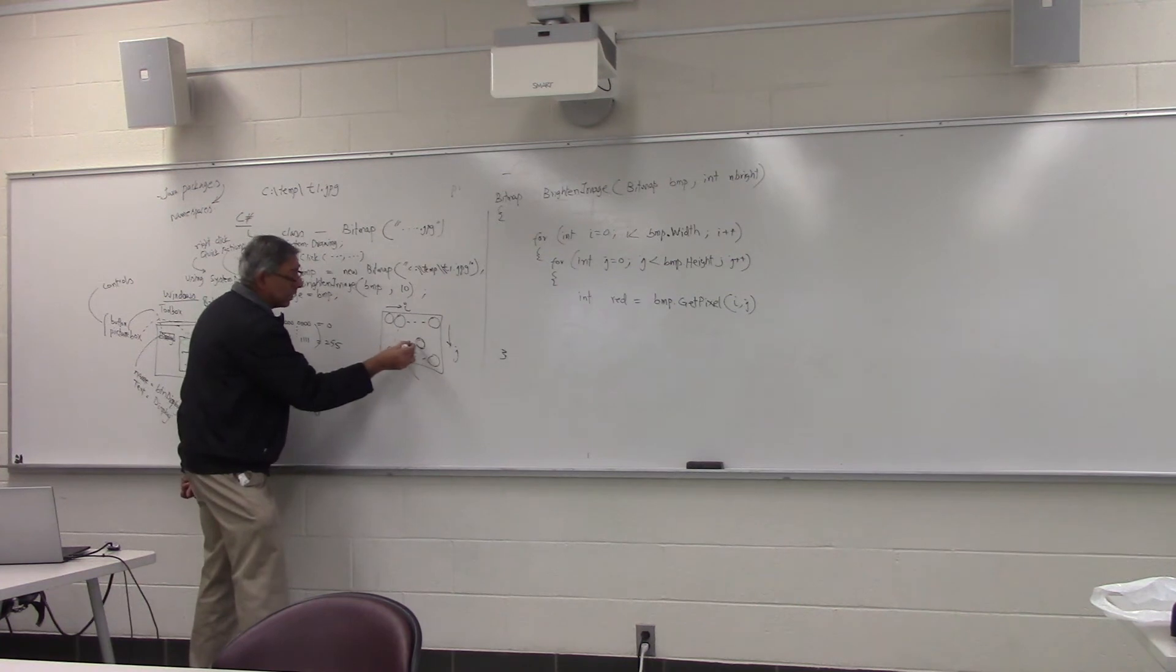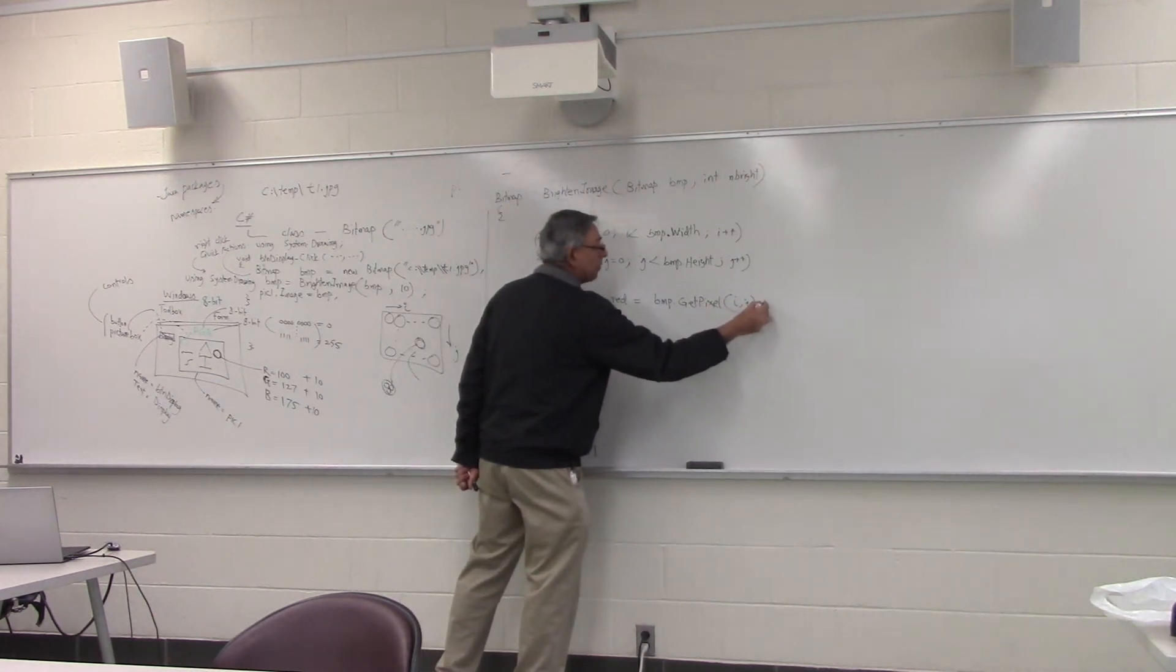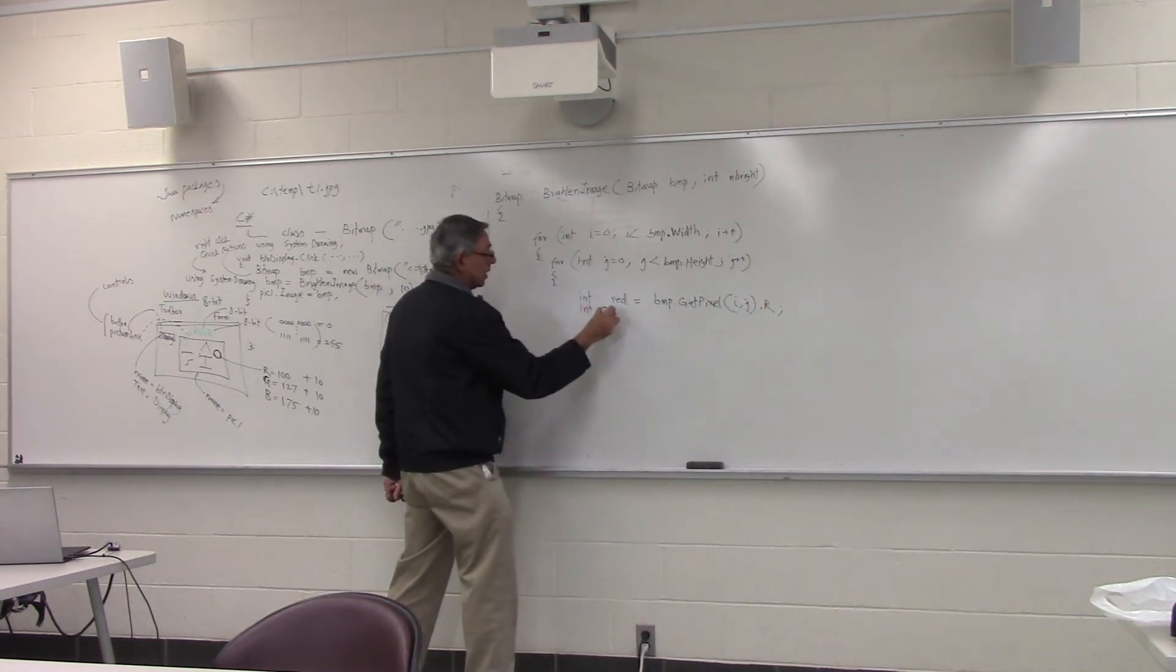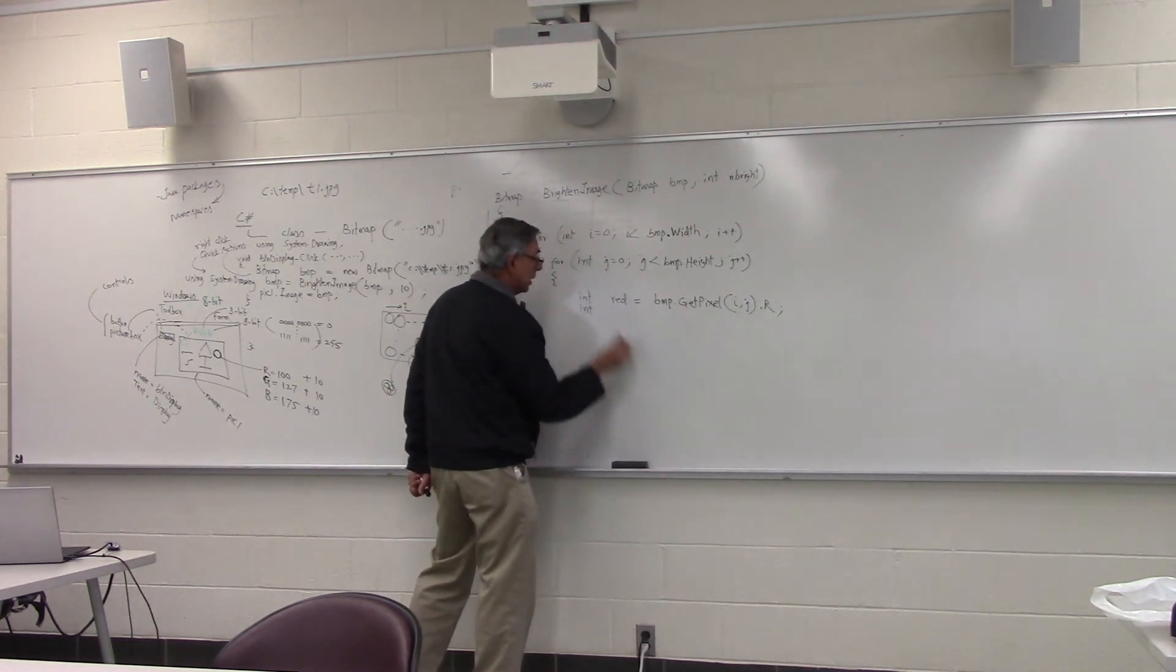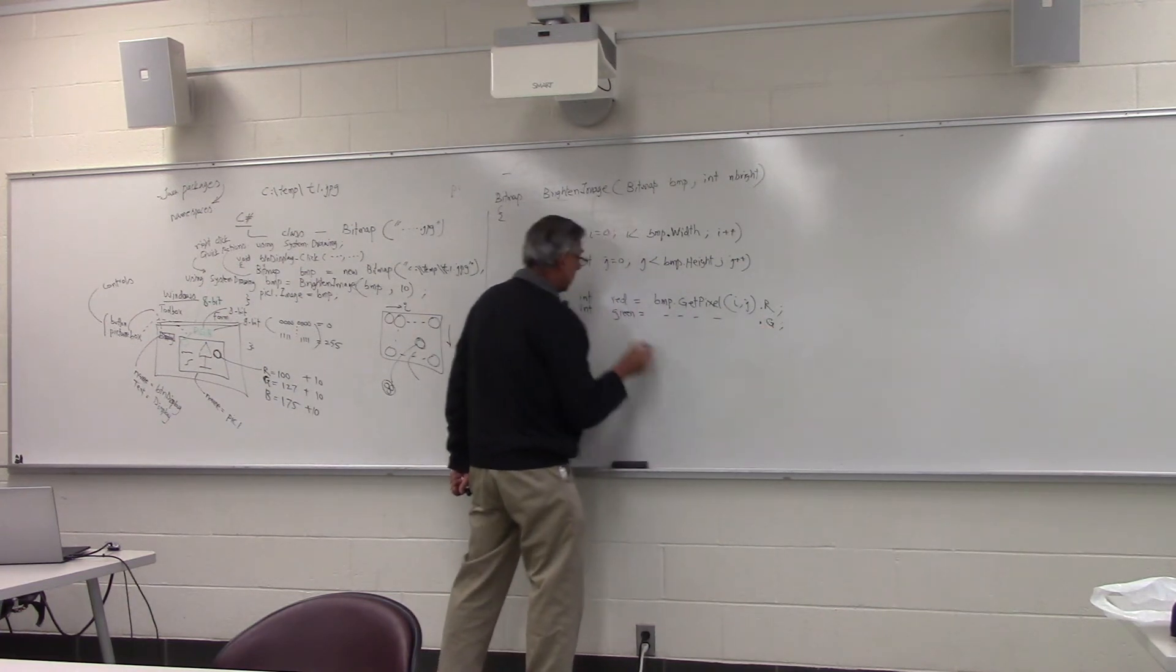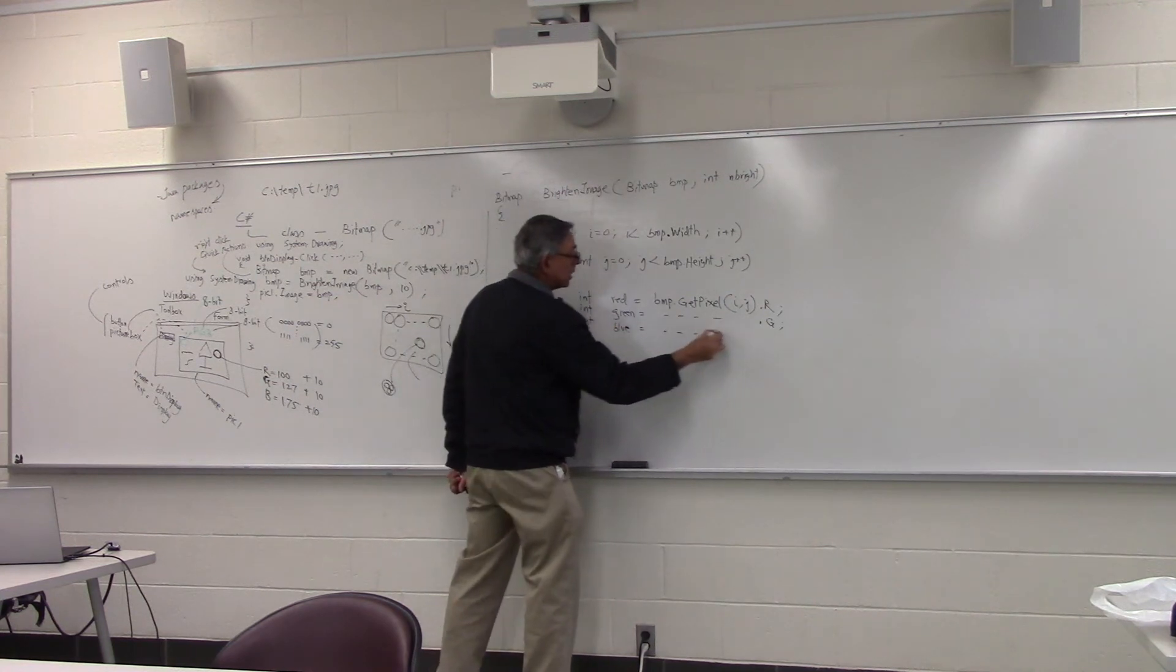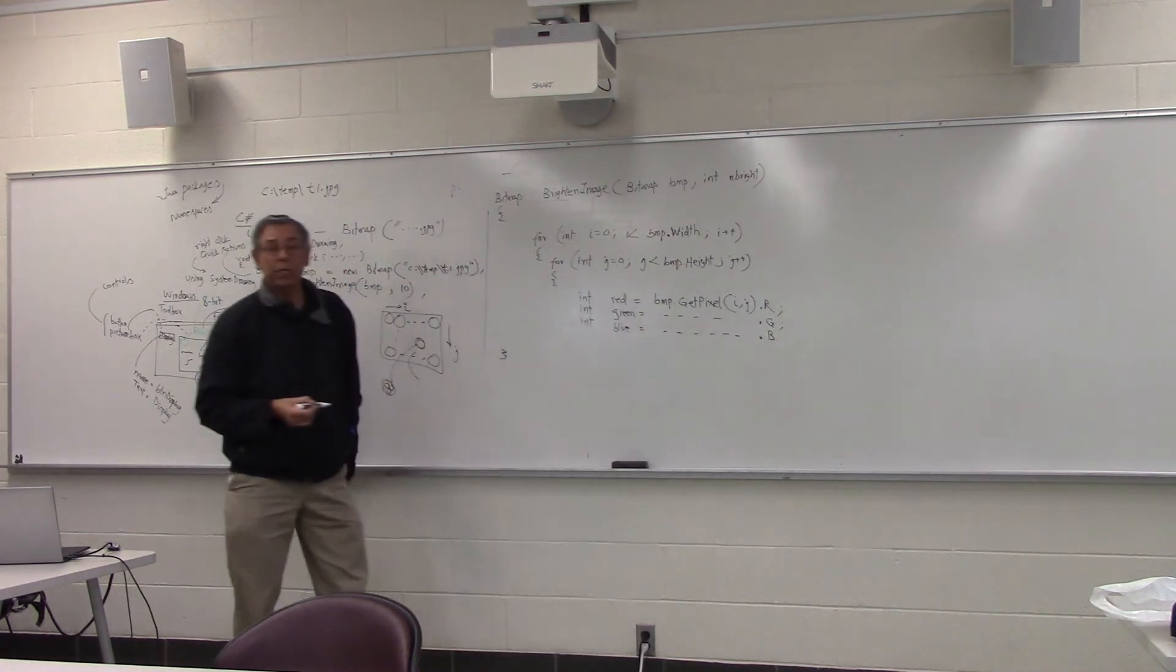And what is pixel further composed of? RGB. Then you can say green equal to same thing dot G. Int blue equal to same thing dot B. Then what do we want to do? We want to brighten it by this value, right? N bright. Suppose that's 10.